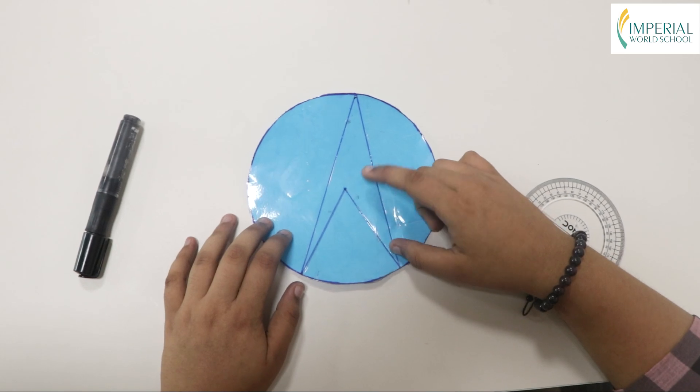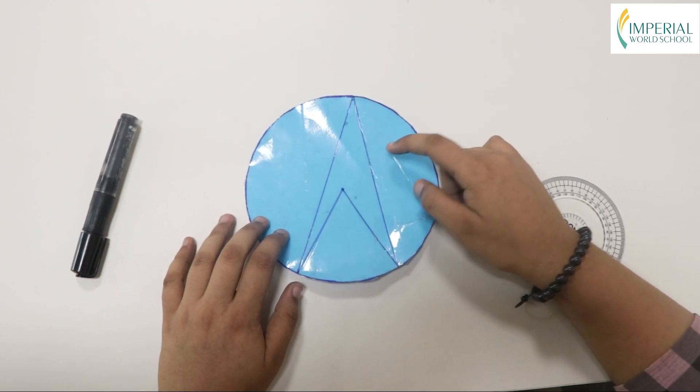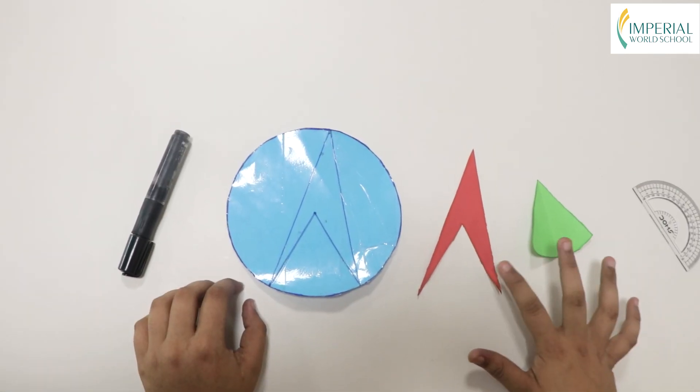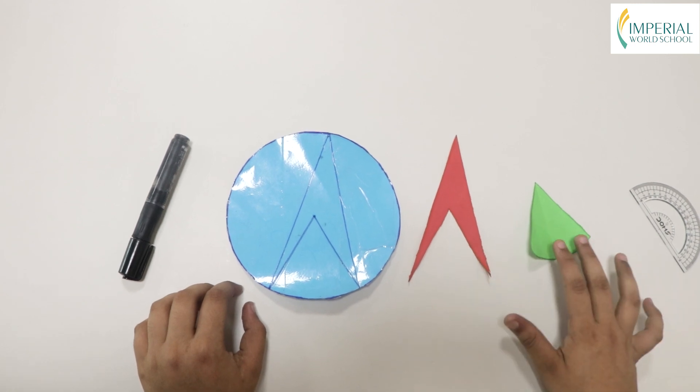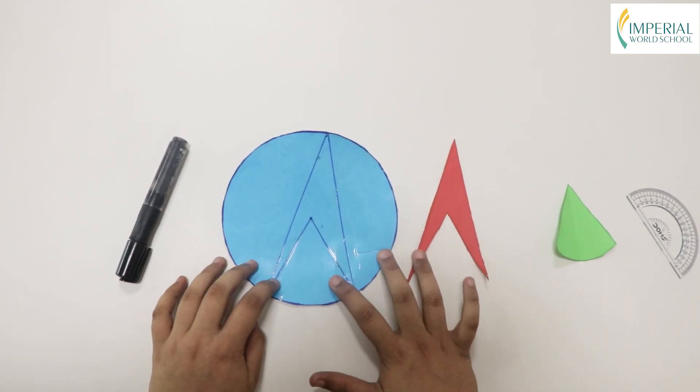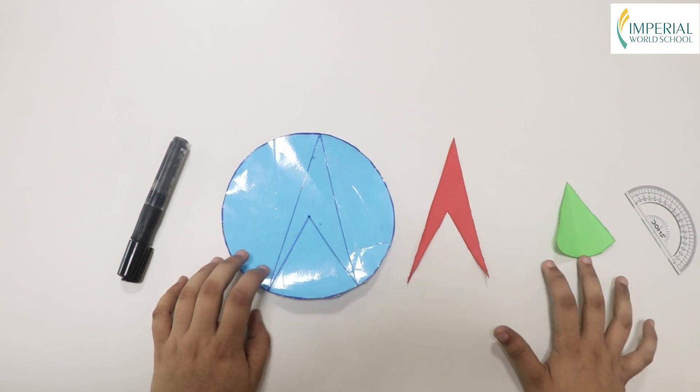Here I have two different angles: one is an inscribed angle and one is a central angle of the same circle, shown here in two different colored papers.